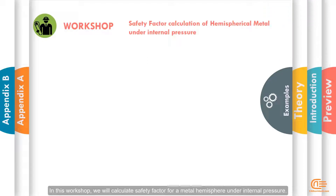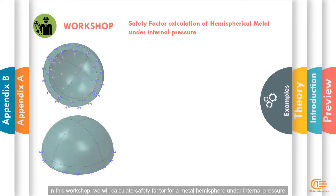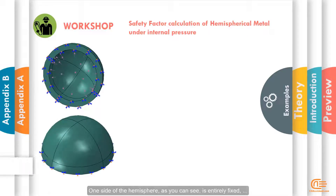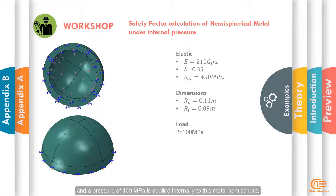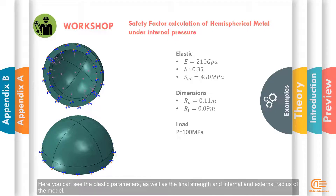In this workshop, we will calculate the safety factor for a metal hemisphere under internal pressure. One side of the hemisphere, as you can see, is entirely fixed, and a pressure of 100 MPa is applied internally to this metal hemisphere. Here you can see the plastic parameters as well as the final strength and internal and external radius of the model.